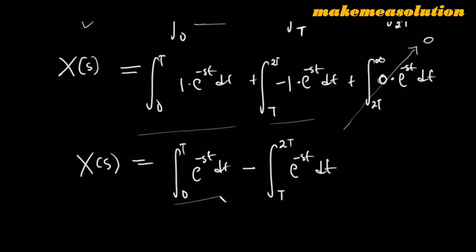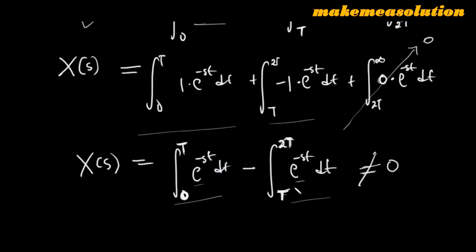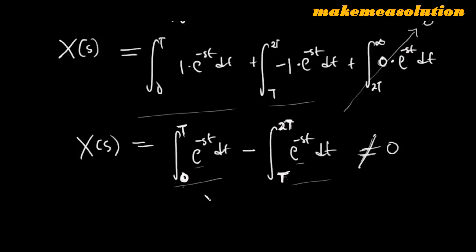Someone might say we are integrating the same exponential function and call the answer zero — but the answer is not zero. The reason is because of the definite integral: integrating from zero to T is not the same as integrating from T to 2T. The exponential function is not linear, so equal intervals do not give equal values. You need to do the hard work of evaluating the integral.